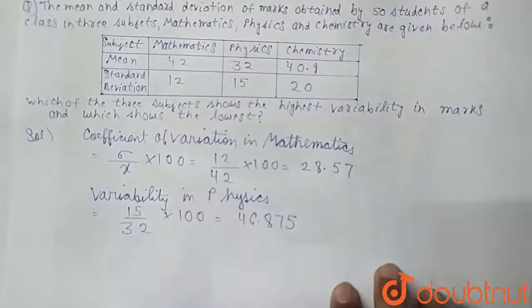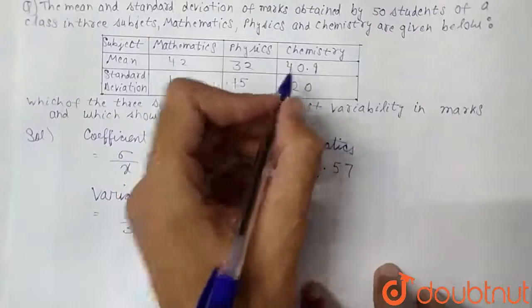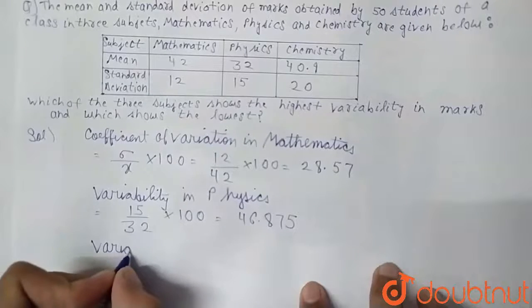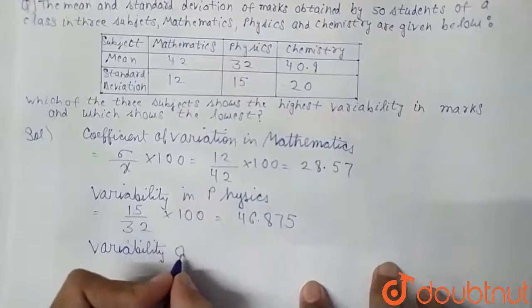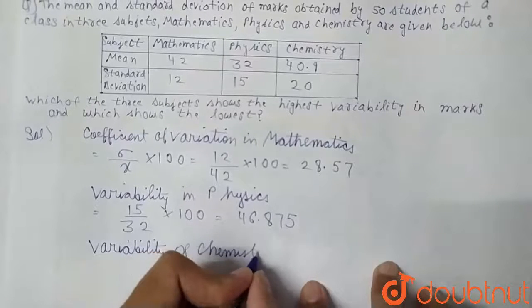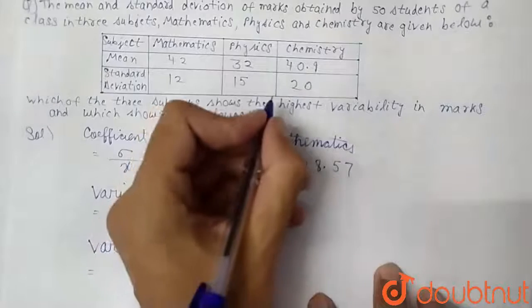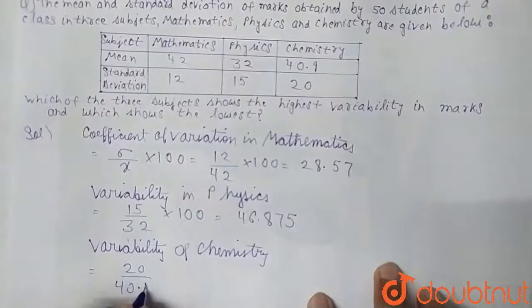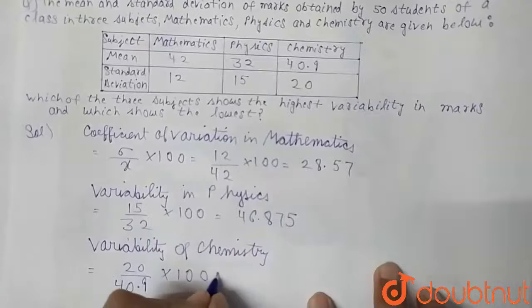Now we will find the variability of chemistry. Using the same formula, CV = (20 / 40.9) × 100 = 48.89.